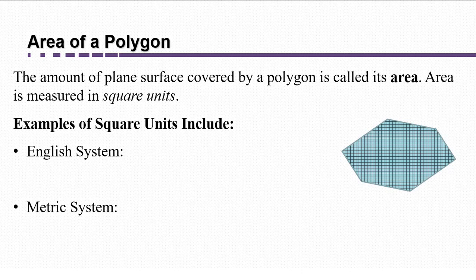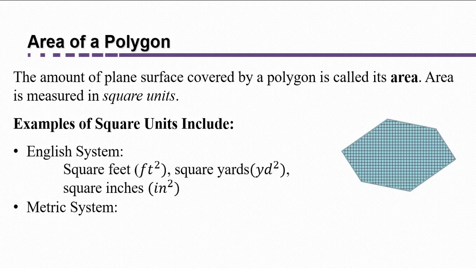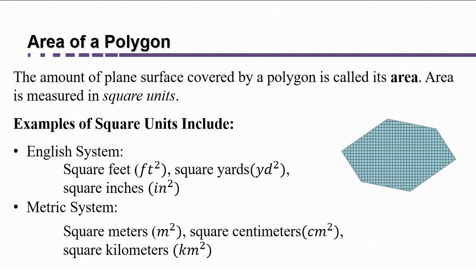We literally are counting the number of unit squares that we could tile the surface with. Some examples of units that we'll use from the English system are square feet, square yards, and square inches. In the metric system, we'll use square meters, square centimeters, and square kilometers.